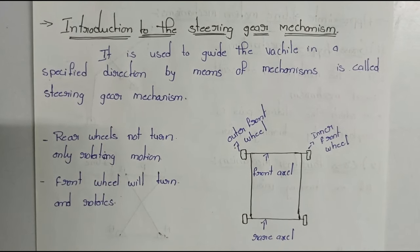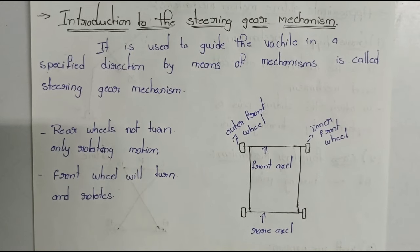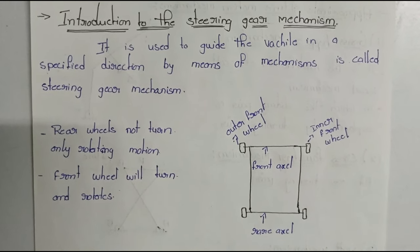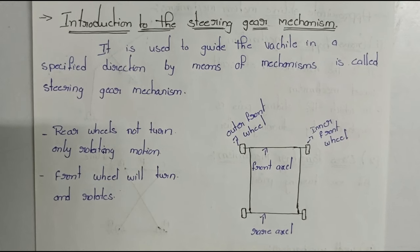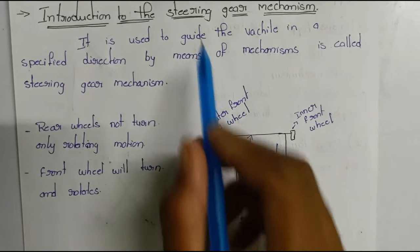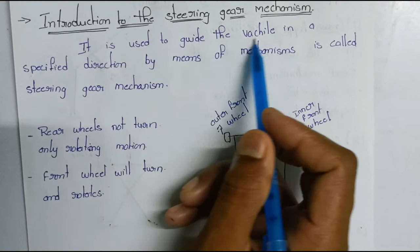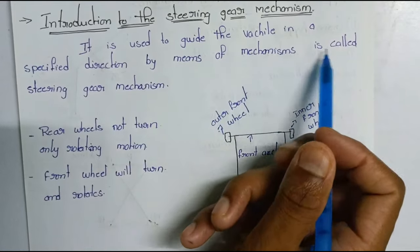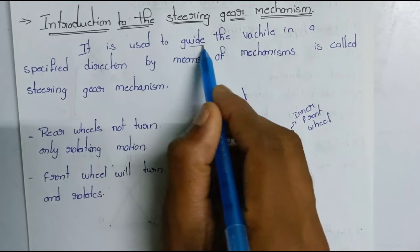In this video, I have a diagram of the steering gear mechanism. It is used to guide the vehicle in a specified direction by means of mechanism. It is called the steering gear mechanism.